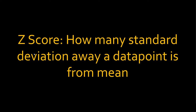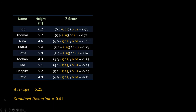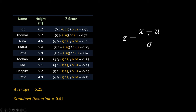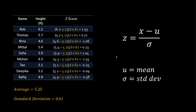You can compute a z-score for every single data point. For this height column, the average is 5.25 and the standard deviation is 0.61. From every single data point you subtract the average and divide by the standard deviation to get the z-score. The formula is: z = (x − mean) / standard deviation. If you know standard deviation, you already know z-score — there is no rocket science here.